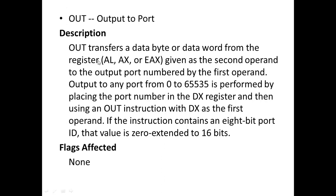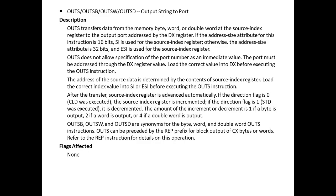OUT (output to port) transfers a data byte or word from the register AL, AX, or EAX given as the second operand to the output port numbered by the first operand. Output to any port from 0 to 65535 is performed by placing the port number in the DX register and using an OUT instruction with DX as the first operand. If the instruction contains an 8-bit port ID, that value is zero-extended to 16 bits. None of the flags are affected.